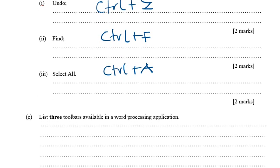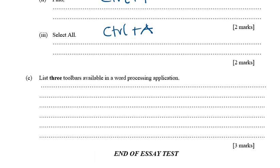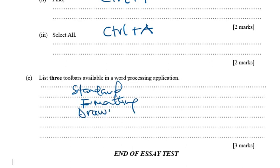Part (c) says: list three toolbars available in word processing. We have the Standard toolbar, the Formatting toolbar, and the Drawing toolbar. There are actually many more toolbars available. Those are the discussions for the 2017 BECE ICT paper. I hope you enjoyed the discussion.